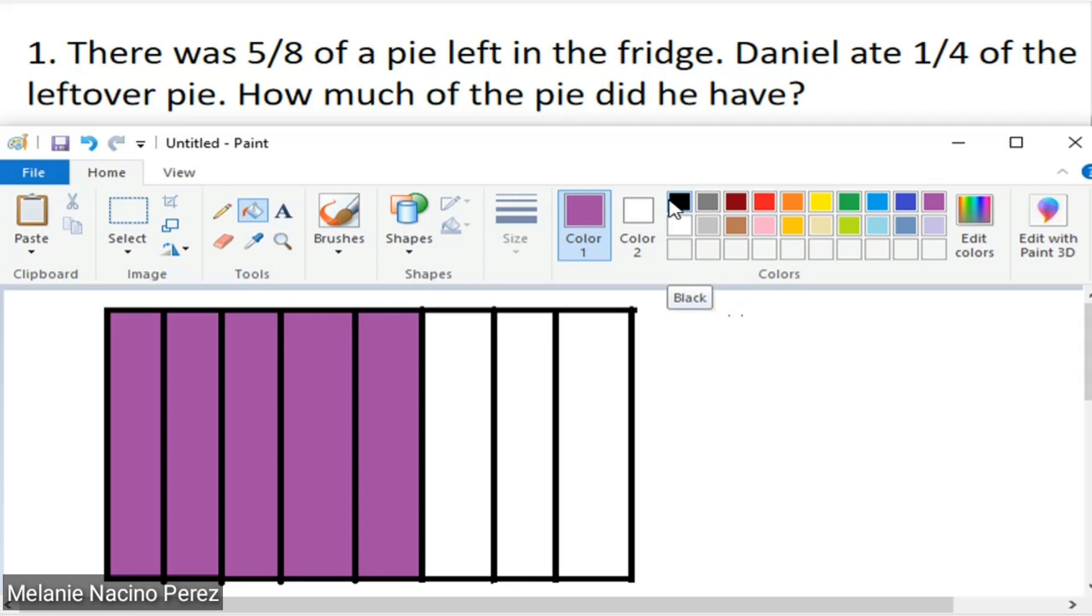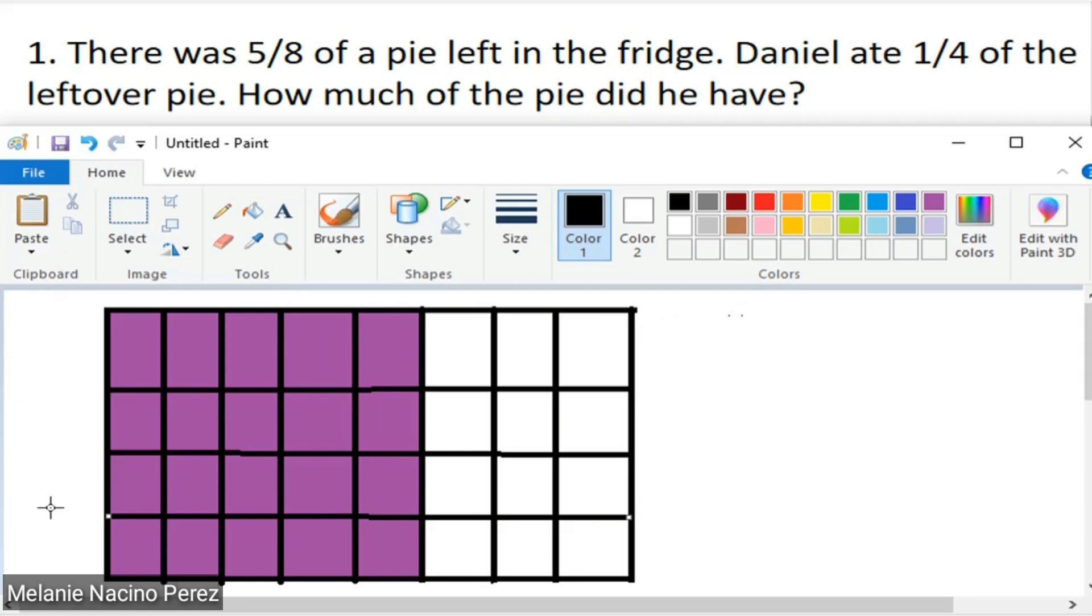It says Daniel ate 1/4 of the leftover pie. So what we'll do is divide this pie into 4 equal parts again. This rectangle is the whole pie, this violet is our leftover pie. And to represent the 1/4 of the leftover pie that Daniel ate, I'll color it red.